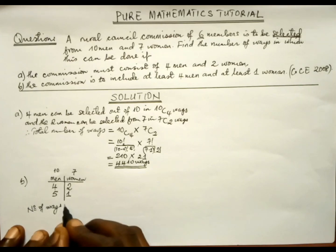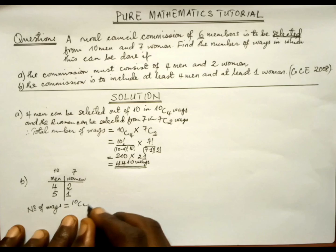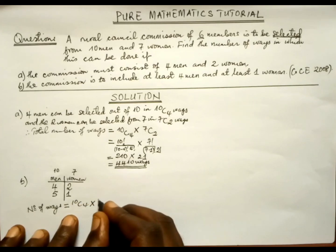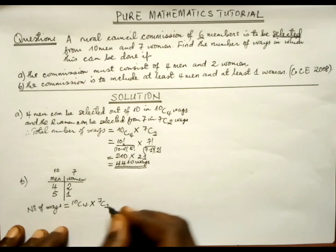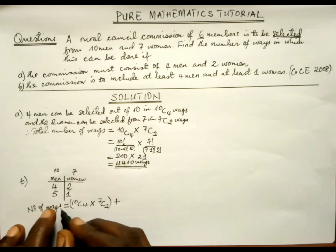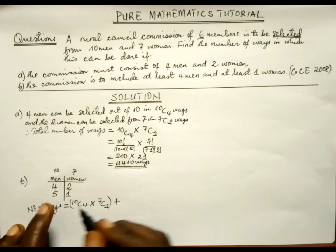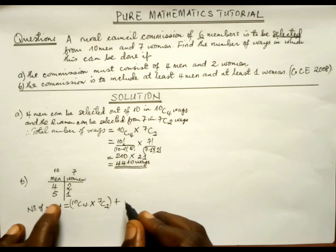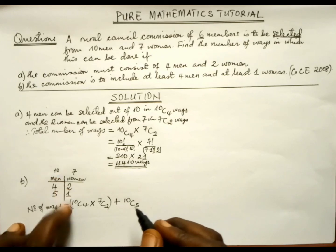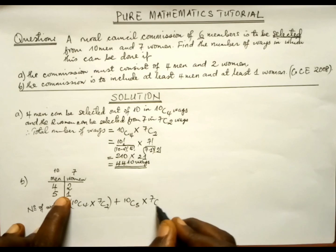The number of ways equals 10C4 times 7C2, plus 10C5 times 7C1. Moving down to the second option, we add because it is 'or.' So we have 10C4 × 7C2 + 10C5 × 7C1.